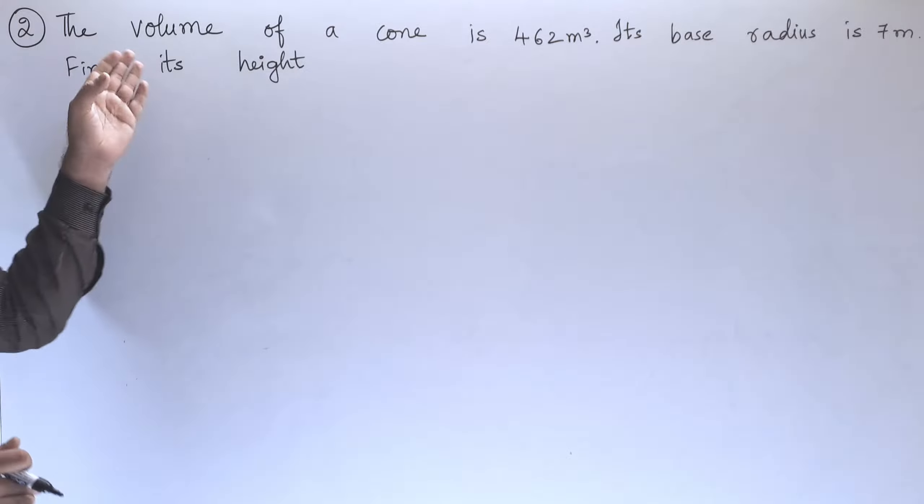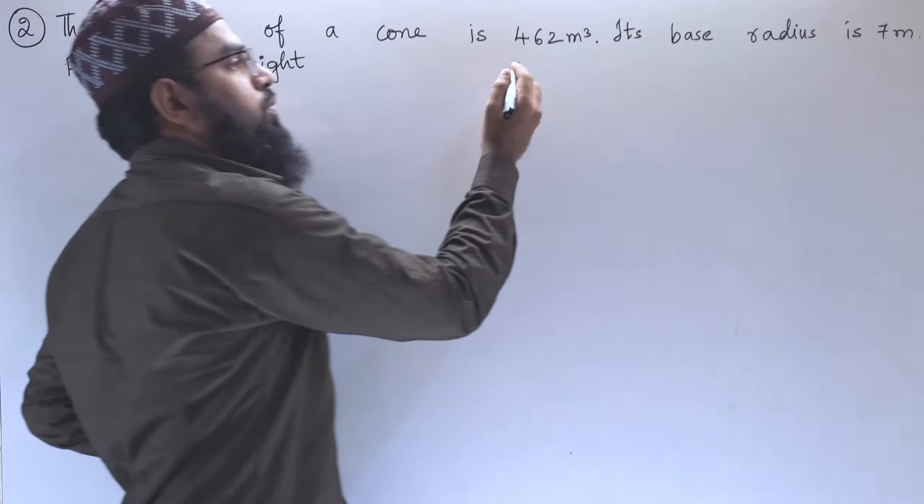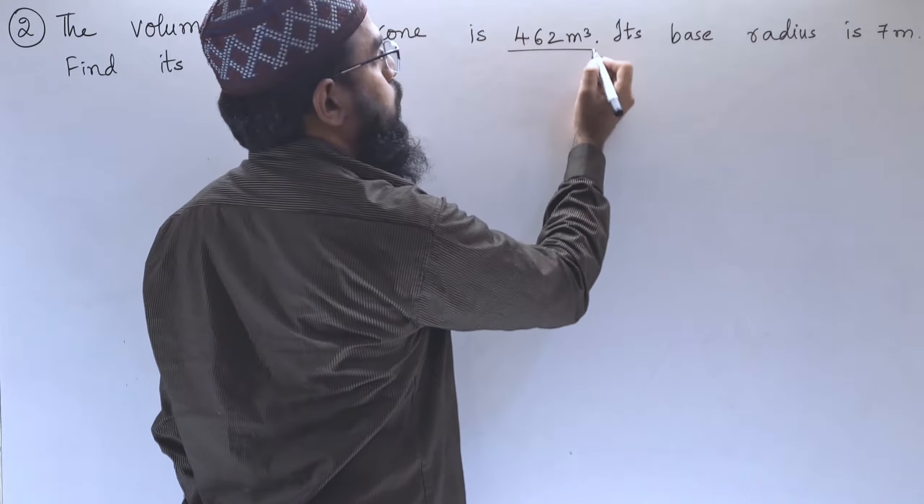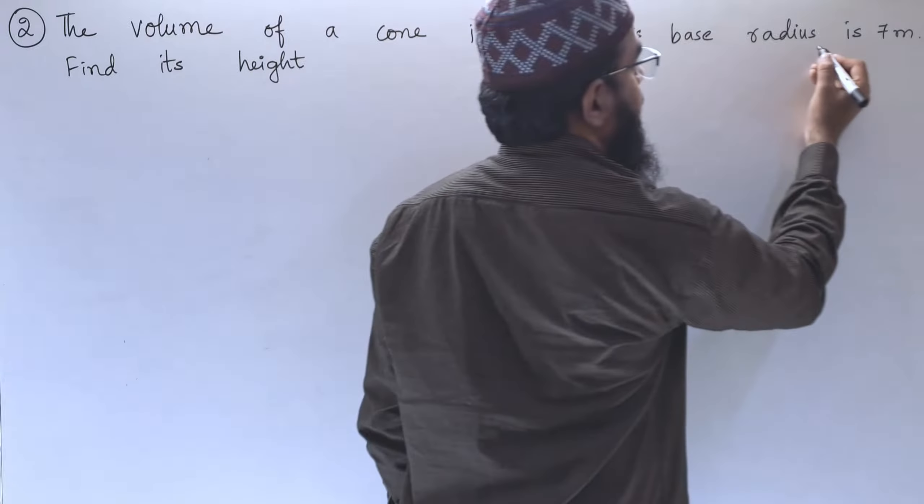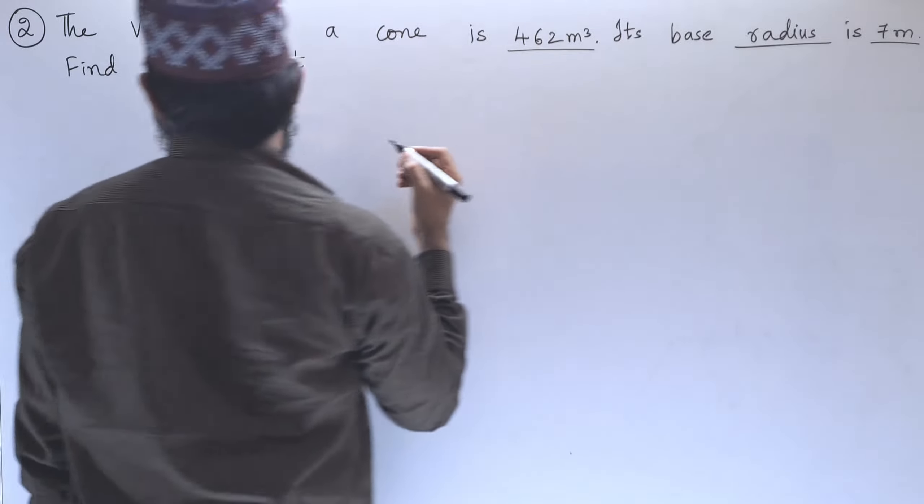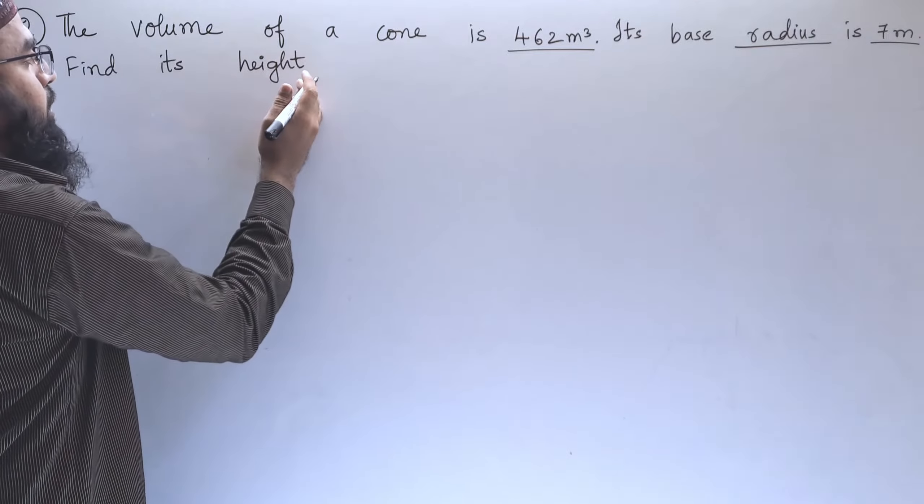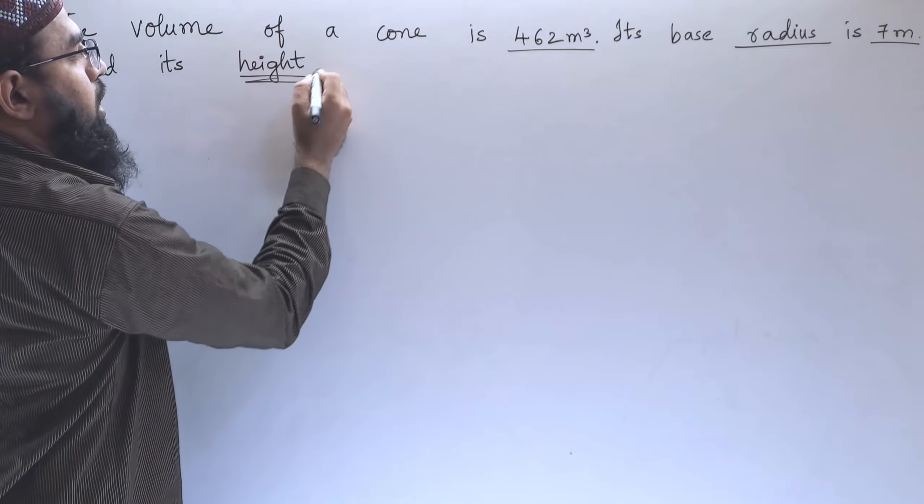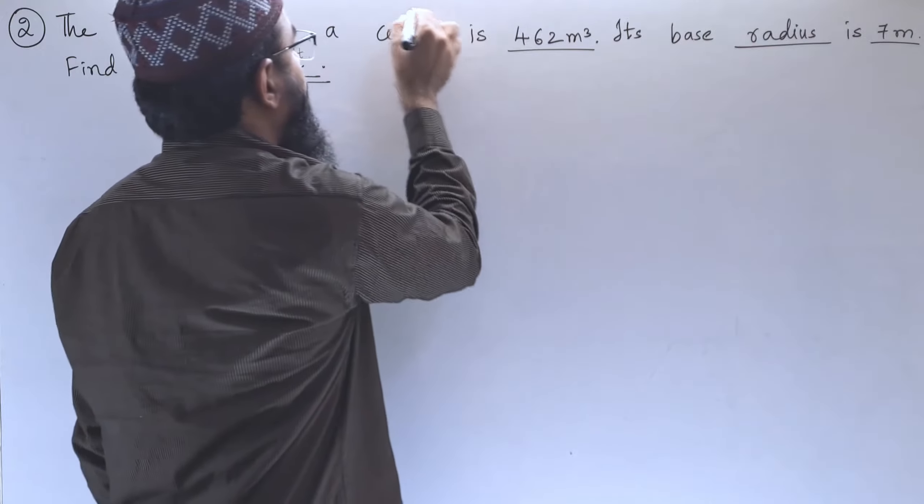Second problem: the volume of a cone is 462 cubic meters, its base radius is 7 meters. Find its height. So we need to find out the height. Let us draw a cone.